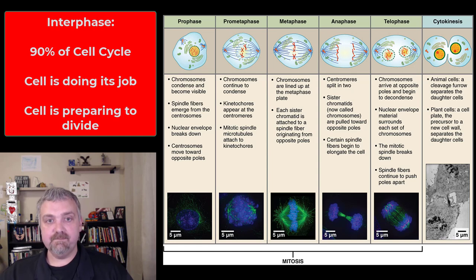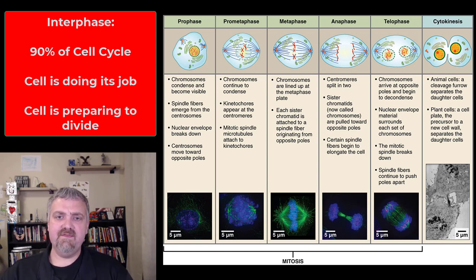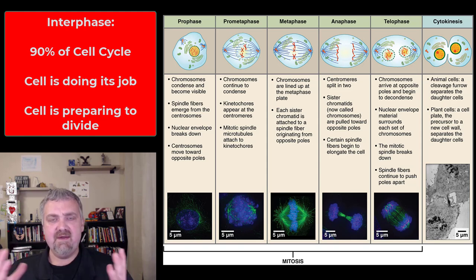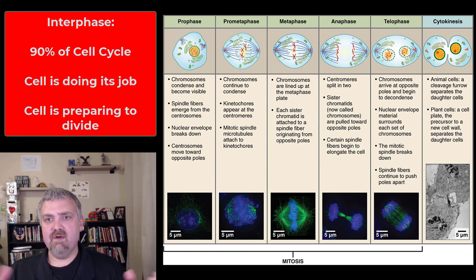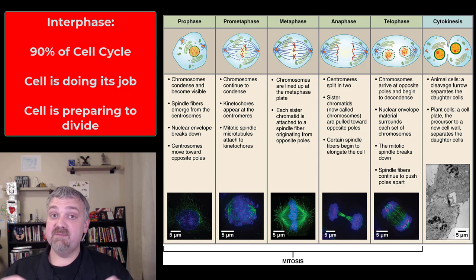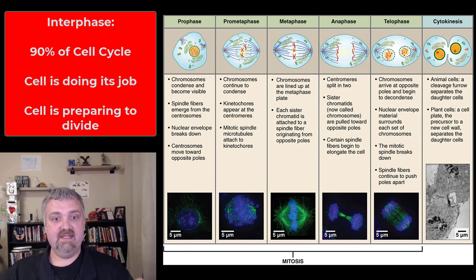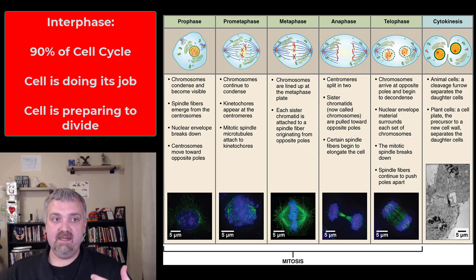Now let's look at the phases of mitosis. During interphase — this is before mitosis — it's about 90% of the typical cell's life cycle. The cell is just doing its job. It's not dividing, but it's preparing to divide by doing things like replicating DNA and replicating organelles.